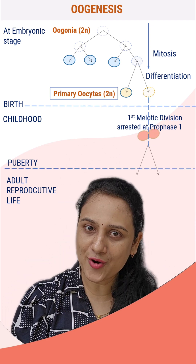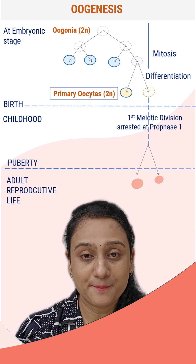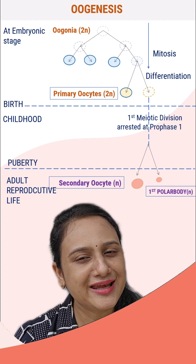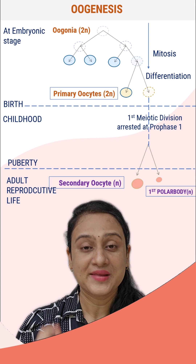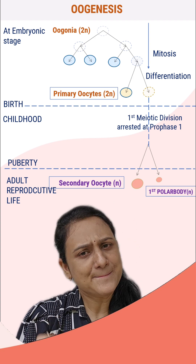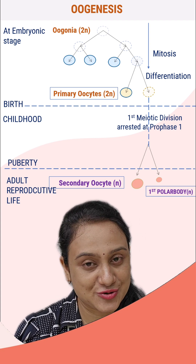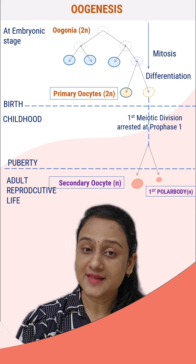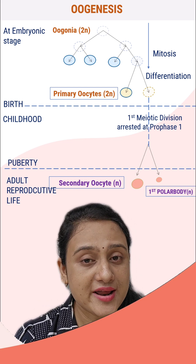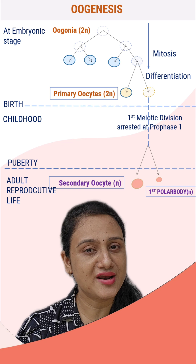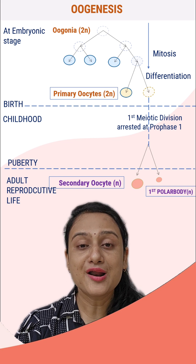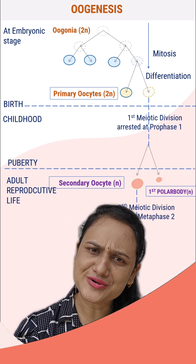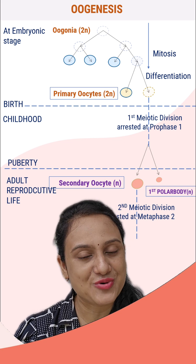Meiosis 1 forms two unequal haploid daughter cells: one big secondary oocyte and one tiny first polar body. That first polar body may or may not undergo meiosis 2 — it may degenerate at that stage itself. This secondary oocyte, which is haploid in nature and has 23 chromosomes, undergoes meiosis 2, but also gets arrested at metaphase 2 of meiosis 2.